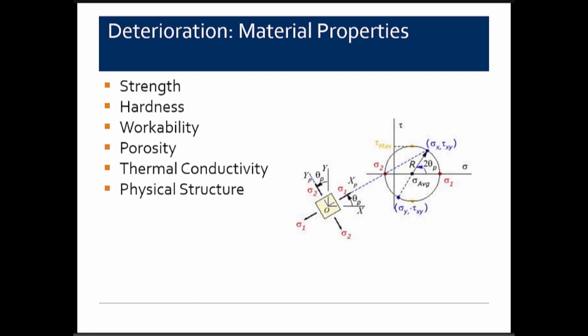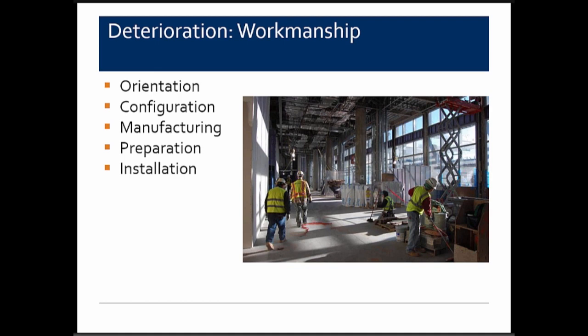Material properties contributing to deterioration include the strength and hardness of the material, workability, porosity of the clay body, and thermal conductivity. Other deterioration types stem from workmanship: orientation and configuration of installation, how units go back to the structure, manufacturing issues, preparation before units go into the wall, and installation methods — how things are hung and installed can all cause distress.